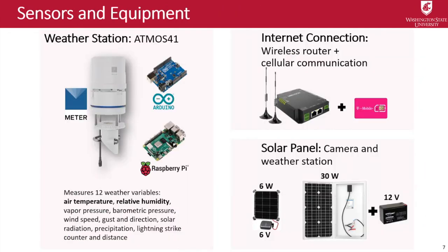Another sensor we use in our research is a weather station. We use the Atmos 41 from Meter Group, and we developed a data logger from an Arduino board. We use a Raspberry Pi board to send the data to the cloud system. In the field, we use an internet connection from a wireless telephone service — in this case, T-Mobile — and a Wi-Fi router that can connect with a SIM card. For power, the small solar panel is used with the camera and the big one is used with the weather station and the center station where we deploy the router, which requires more power.